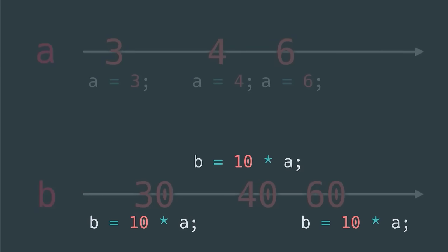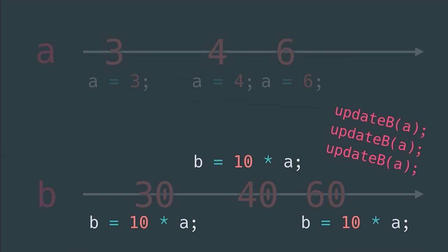With this assignment approach, we have two serious problems. The first one is that you're repeating 10 times A here multiple times. So what if you make a typo and write 11 times A? Then you're going to get inconsistent data. You could put that 10 times A inside some function called updateB, but then you still need to call updateB multiple times whenever you change A. And what if you forget to call updateB? Then you also get some bad data.